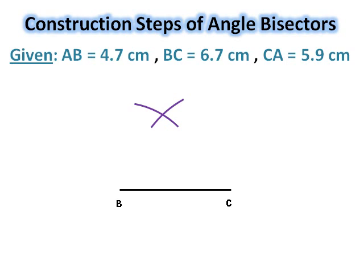Now join point B with the intersecting point of these arcs with a straight line. Now join point C with the intersecting point of these arcs with a straight line using a ruler. We will give the name to this intersecting point as A. We have triangle ABC.